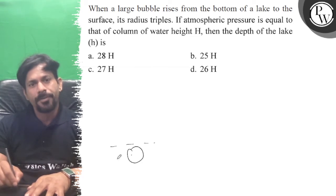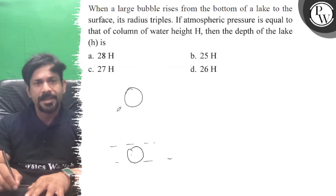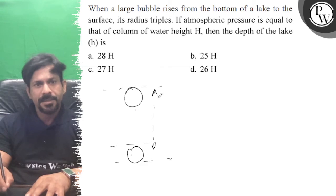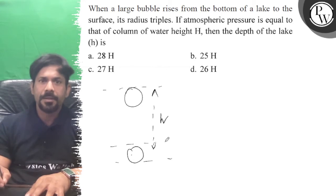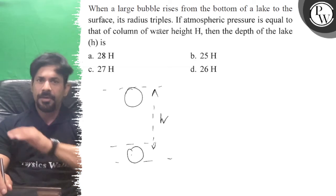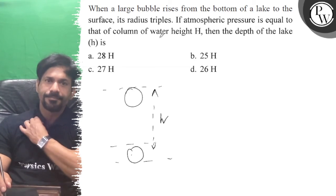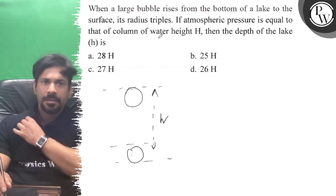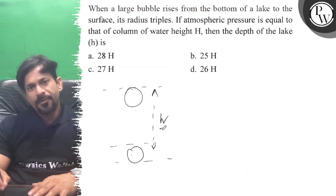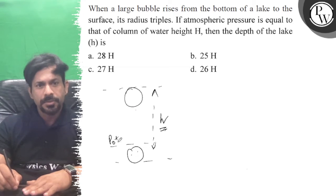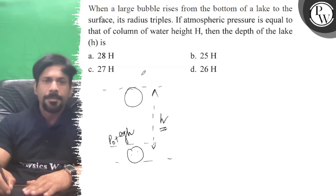So let's do this. When it's at the bottom of the lake, at the bottom of the lake, the pressure is equal to that of a column of water height H. So this is H, the depth of the lake.